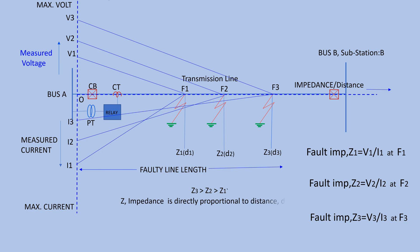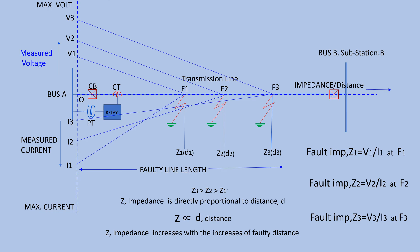Since the impedance of a transmission line is directly proportional to its length, it can be concluded that a distance relay can only operate if a fault occurs within a predetermined distance or length of line. Hence the relay will only operate when the impedance of the line becomes less than a predetermined impedance. The operation depends upon the predetermined value of voltage to current ratio, which is nothing but impedance; the relay will only operate when this ratio becomes less than its predetermined value.